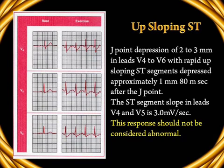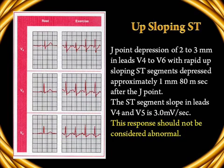Let us look at this ECG recording. Three leads are presented — V4, V5, V6 — both in resting ECG and exercise ECG. In the resting state, all three leads show normal ST segment with no depression or elevation compared to baseline (the PR segment). In the exercise ECG, we see depressed ST segments in the three leads, but these depressions are not significant — they do not represent coronary artery disease, because this depression is an upsloping ST depression. A J-point depression of 2 to 3 mm occurring 80 milliseconds after the J-point with a rapidly upsloping ST segment is not diagnostic of coronary artery disease.